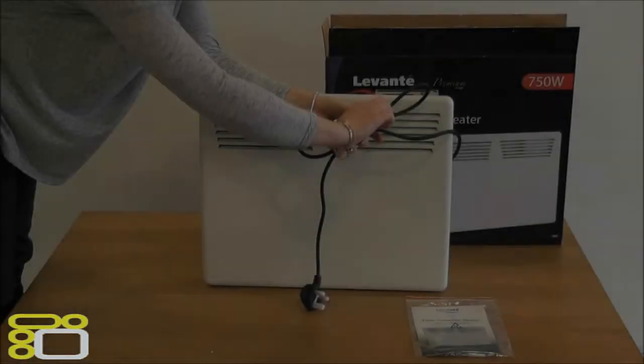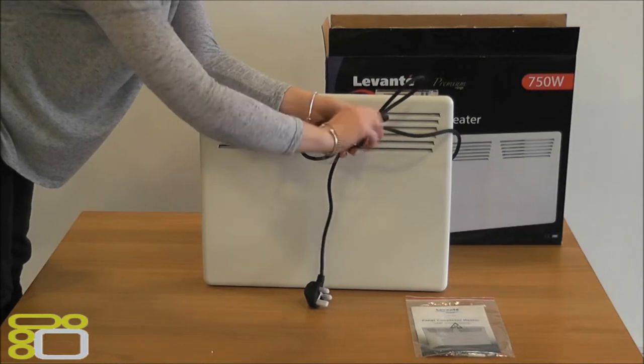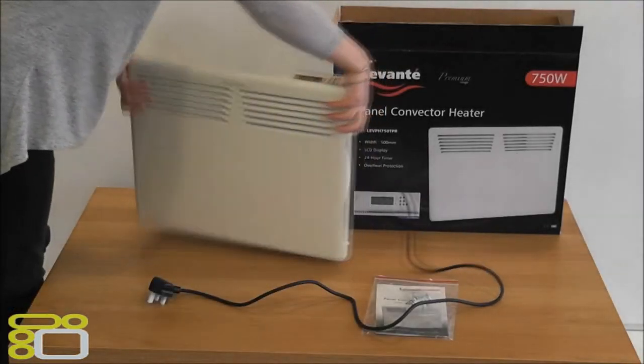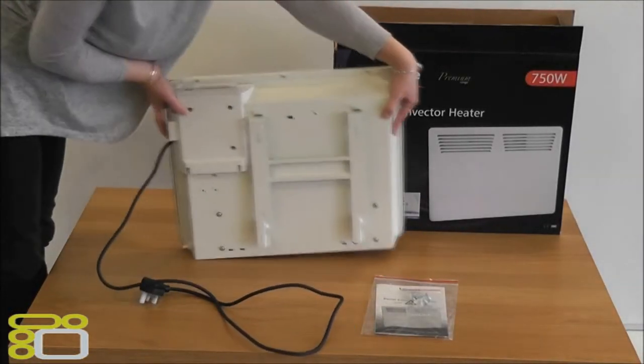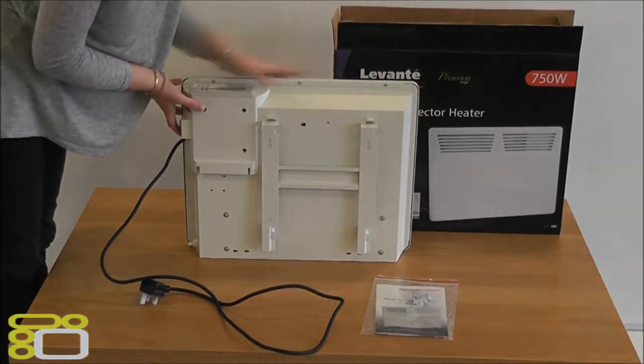The pre-fitted cable is 1.5m long and comes out from the right of the heater. On the back of the heater you will find the wall brackets which are simple enough to remove and mount to the wall.